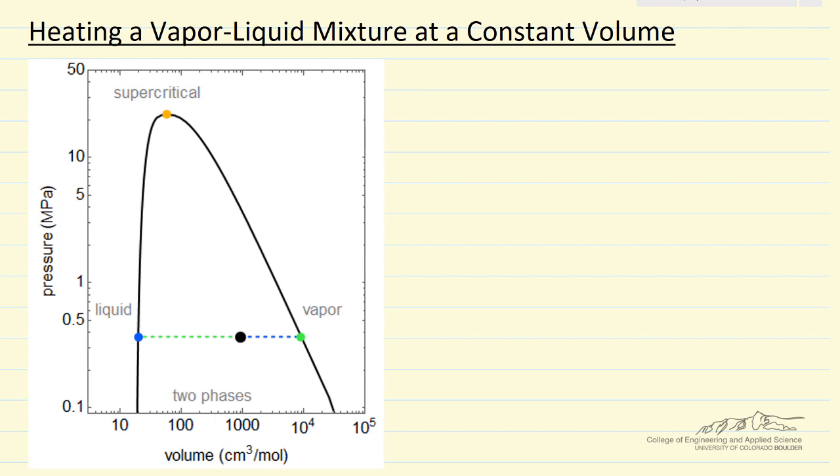For the point that we're looking at, the black dot here, the volume is greater than the critical volume. The critical volume is this volume, this is the critical point, which for water is at 22.1 megapascals and 647 kelvin. The volume is greater, and the particular point that we're looking at, this is only 1% vapor. So quality is only 0.01. But remember, this is a log scale.